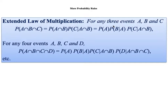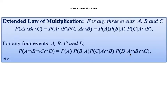Extending to four events A, B, C, and D: the probability of all four occurring equals the probability of A, multiplied by the probability of B given A occurred, multiplied by the probability of C given A and B occurred, multiplied by the probability of D given A, B, and C already occurred.